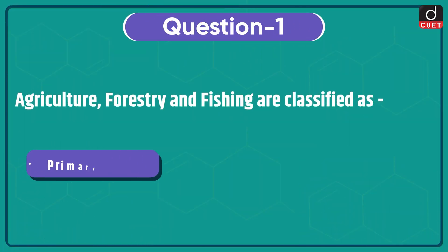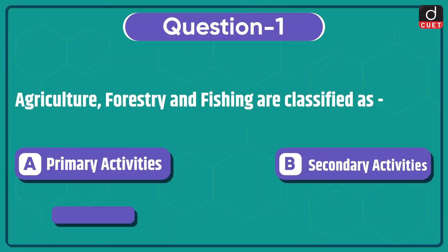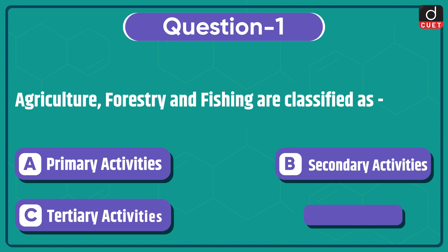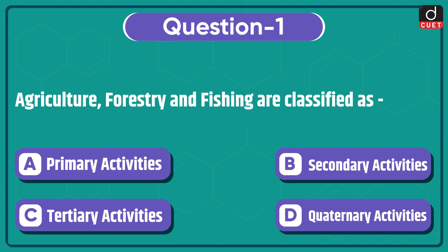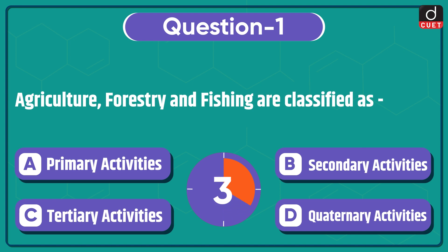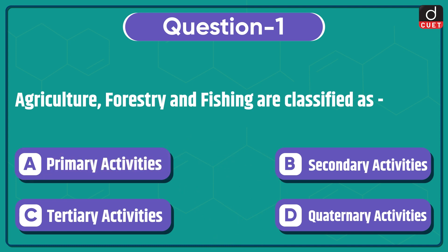Now let's begin today's session. First question: agriculture, forestry, and fishing are classified as — primary activities, secondary activities, tertiary activities, or quaternary activities? The correct answer is option A, primary activities.